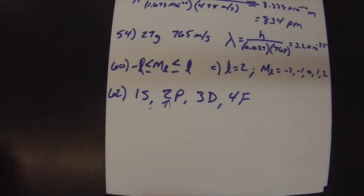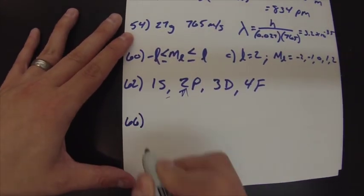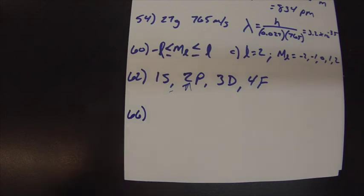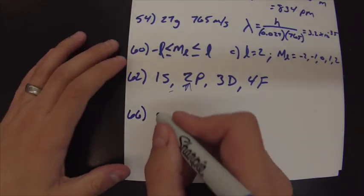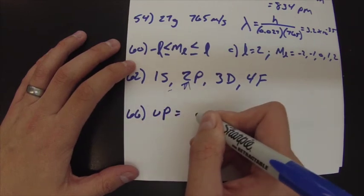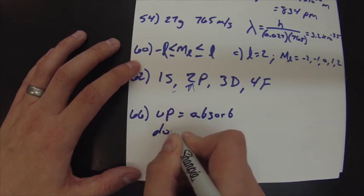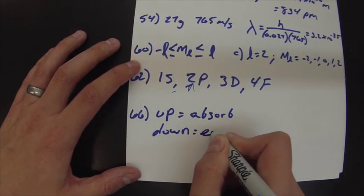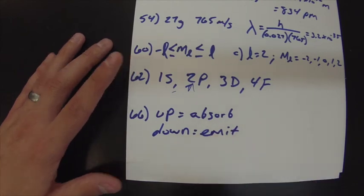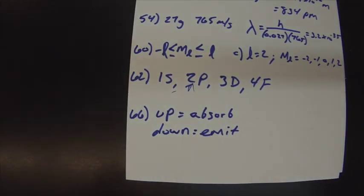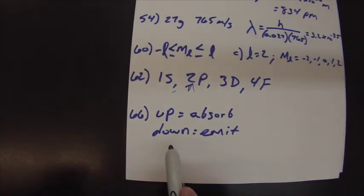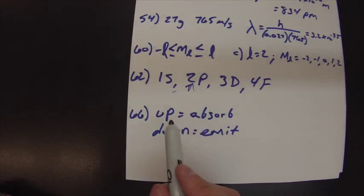Number 66 asks you to determine whether each hydrogen atom transition corresponds to absorption or emission. Remember: if the electron goes up in energy level, it absorbed energy; if it goes down, it emitted energy. So if your quantum number gets smaller, it went down and emitted; if it gets bigger, it went up and absorbed.